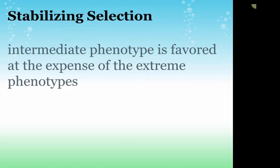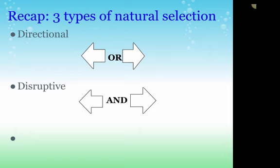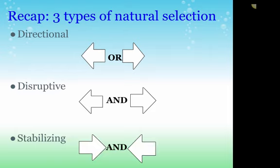So to summarize: in directional selection, one direction or the other is favored. In disruptive selection, both extreme directions are favored. In stabilizing selection, the intermediate phenotype is favored.